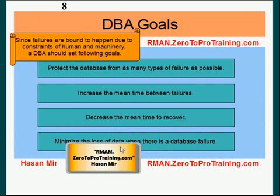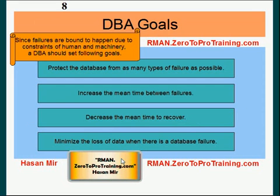Due to constraints of humans and machinery, a DBA should set realistic goals. A non-realistic goal would be: I don't want to ever have a data failure. That's a wrong goal because data failure is bound to happen. More realistic goals would be: number one, protect the database from as many types of failures as possible; number two, increase the mean time between failures; number three, decrease the mean time to recover; number four, minimize the loss of data when there is a database failure.